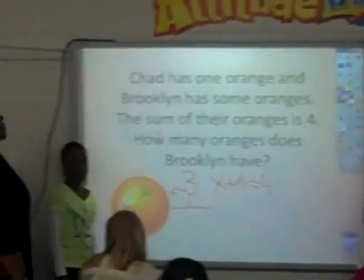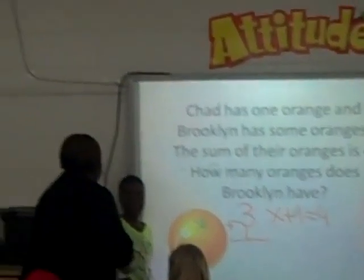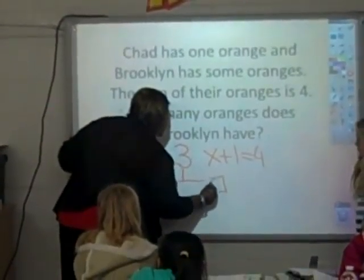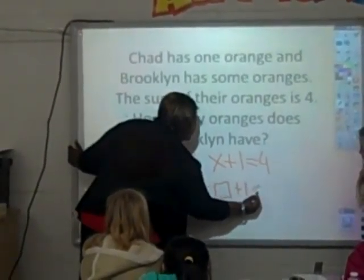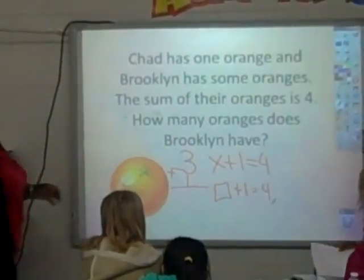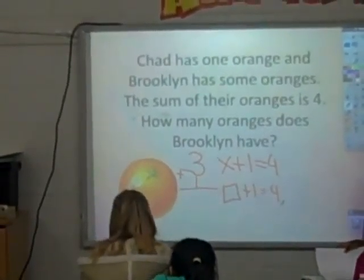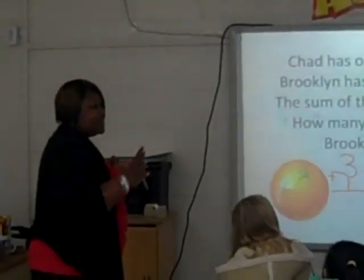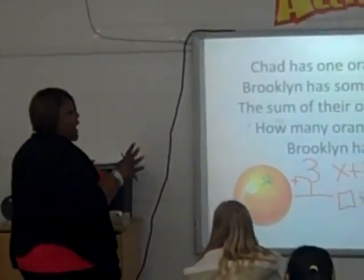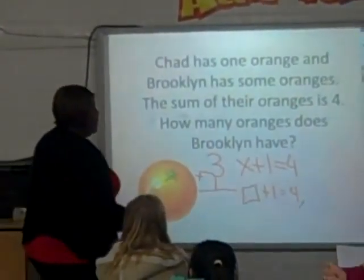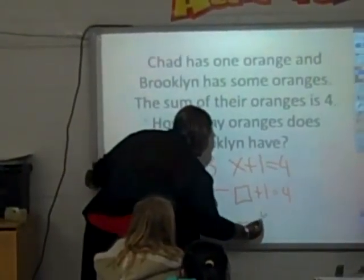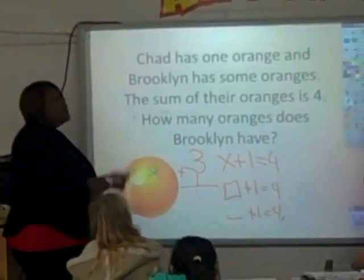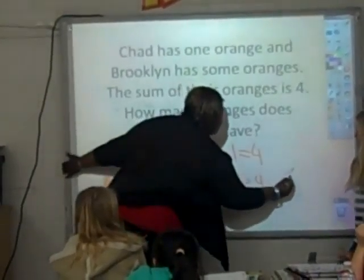So if Chad has one — and thank you, Autumn, to Kayla — this is the way you guys are used to seeing it written. I told you, this is something you guys have already done before. But now we're just using a variable to represent certain things. Instead of a box, or instead of a blank, or a triangle. But those are all different ways that you've seen it. Or a question mark — you've seen it as a question mark.